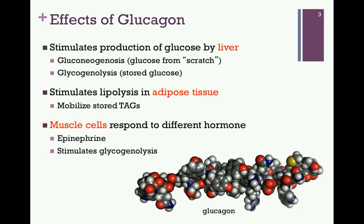In addition to stimulating production of glucose by the liver, glucagon also stimulates lipolysis in adipose tissues, thereby mobilizing the stored triacylglycerols by releasing the fatty acids. We have a space-filling model of glucagon at the bottom of the slide.